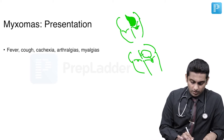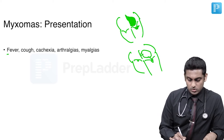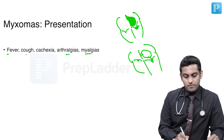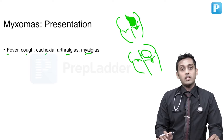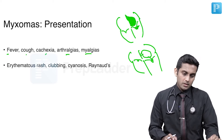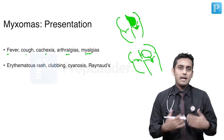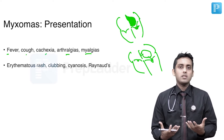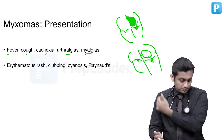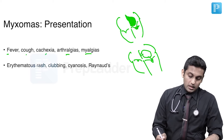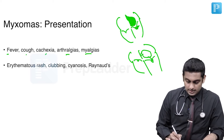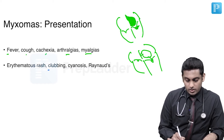They can have prodromal symptoms like fever associated with arthralgias and myalgias. They can have cough and generalized cachexia, sometimes related to a paraneoplastic manifestation or sometimes related to reduced cardiac output and decreased activities. It can also present with erythematous rash, clubbing, cyanosis, and Raynaud's phenomenon.